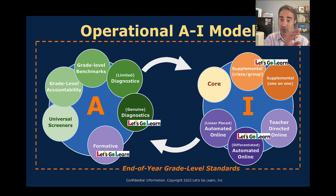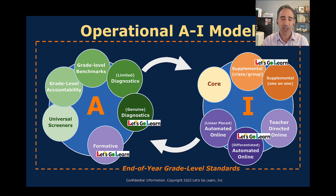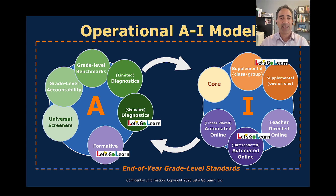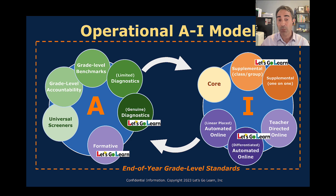Now looking at online instruction, I put it into three categories. First, automated online instruction that's linearly placed — material goes from K to eighth grade and the student is placed on a linear path, which is less efficient. Second, automated online instruction that's differentiated — it looks at what the student knows and doesn't know and assigns individual lessons based on diagnostic data, which requires a genuine diagnostic to drive it. Without one, it will likely default to linear placement.